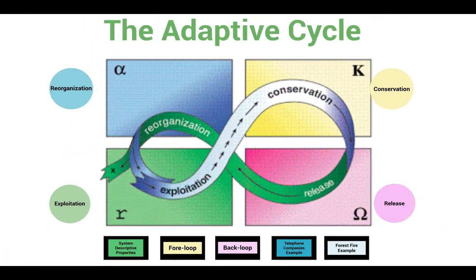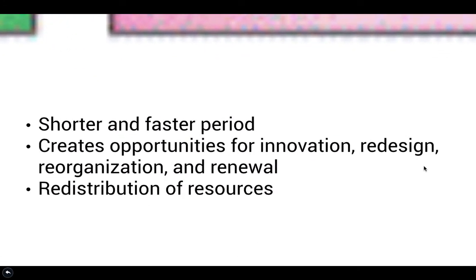Together, the release and reorganization phases are known as the back loop of the adaptive cycle. The back loop is characterized by a much shorter and faster period that creates opportunities for innovation, redesign, reorganization, and renewal by the redistribution of resources.